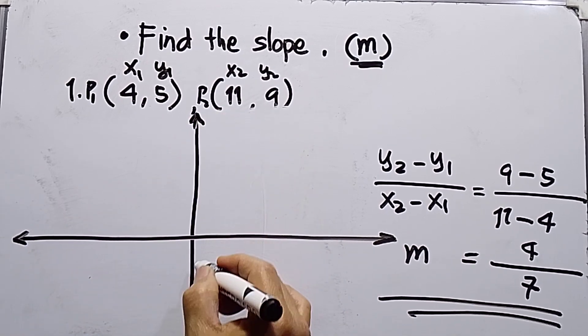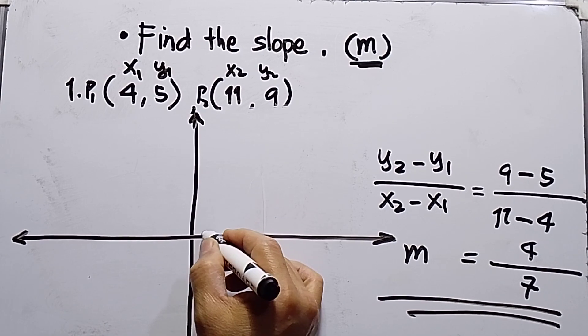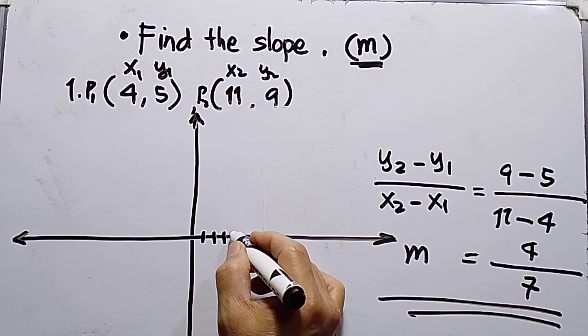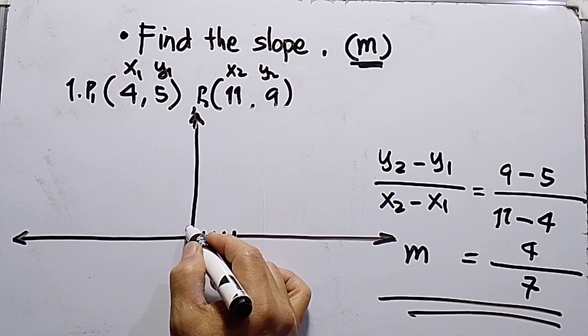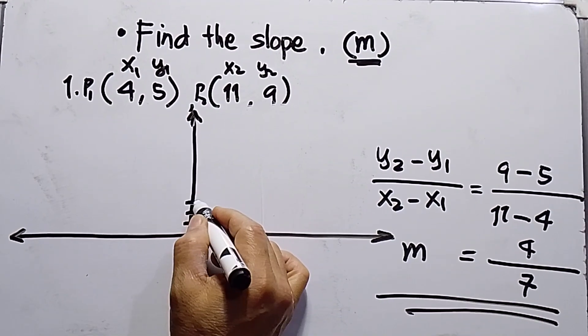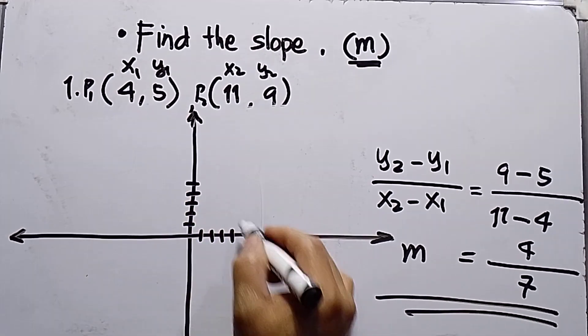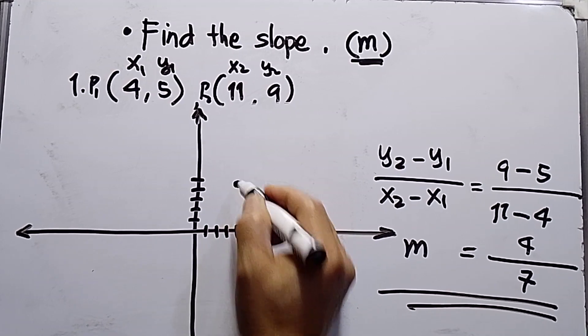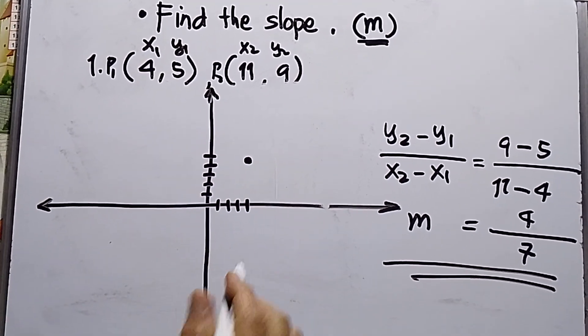So this is 4, 1, 2, 3, 4. This will be 1, 2, 3, 4, 5. So in here. So take note, coordinates are 4 and 5.